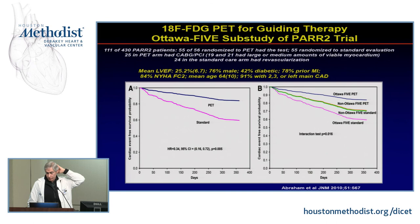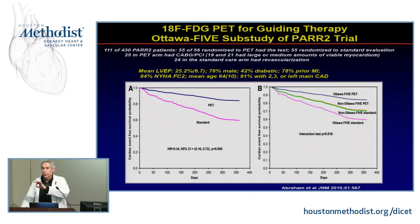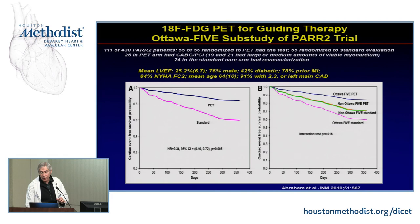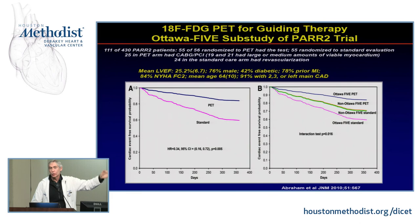A randomized trial published several years ago used PET to identify patients who should or should not get revascularized versus routine care. In the PET-driven arm, patients did much better long-term for survival compared to standard of care. This was particularly striking in the Ottawa Five centers where PET imaging was strictly used as the criterion — if viable, revascularized; if not viable, medical therapy only, with no crossover. PET imaging in viable patients who were revascularized did dramatically better, making this one of the first randomized studies to demonstrate the value of PET-guided therapy.